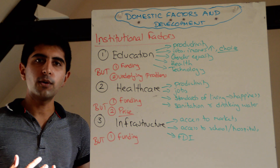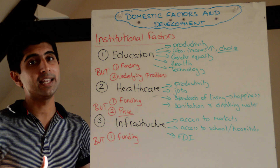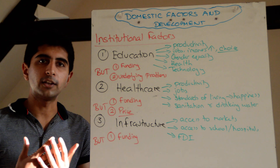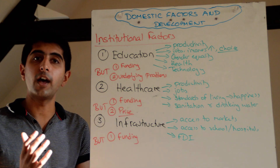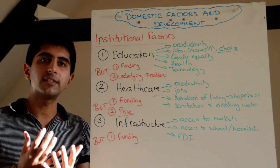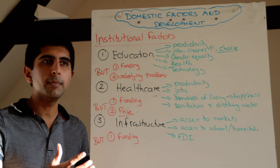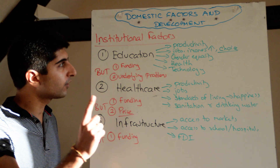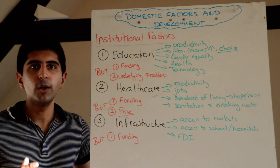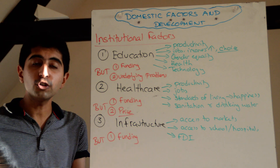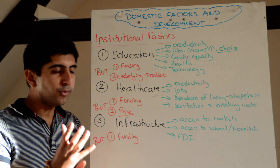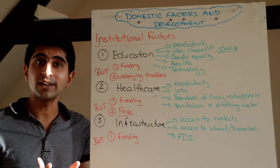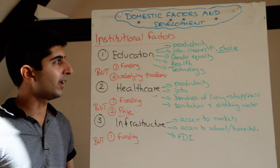The more education there is, and the more educated people there are, the greater potential for these people to gain good jobs, to earn higher incomes, to gain a good standard of living, and to be able to buy material things that make their family better off. It also promotes choice — social and economic choice — both of which have been mentioned by Sen and Tadaro as fundamental in the pursuit of development.